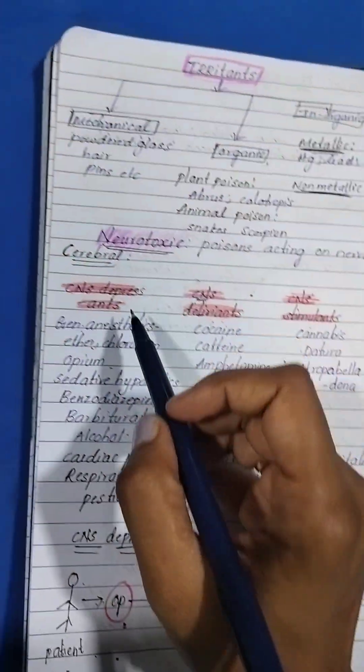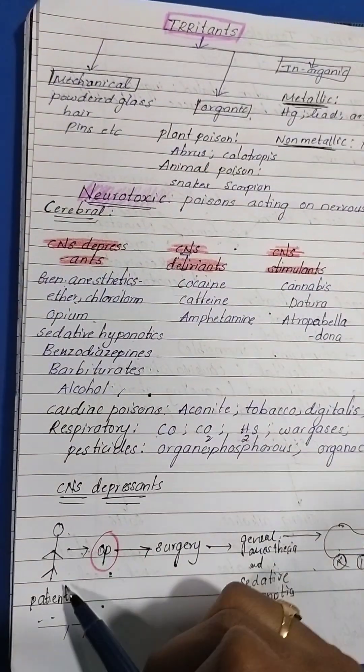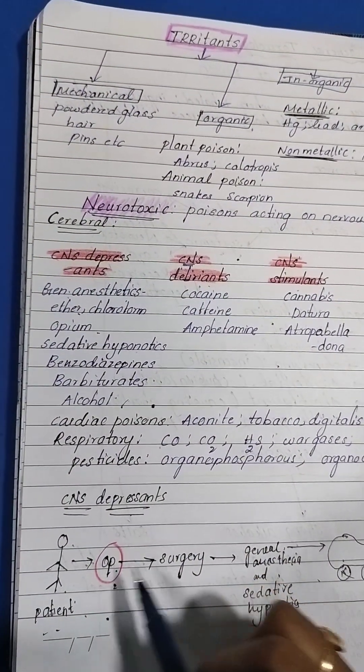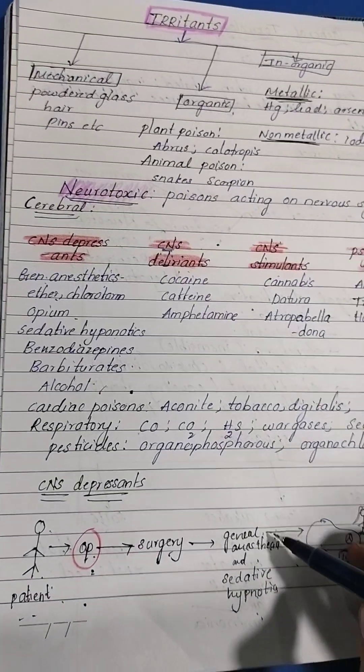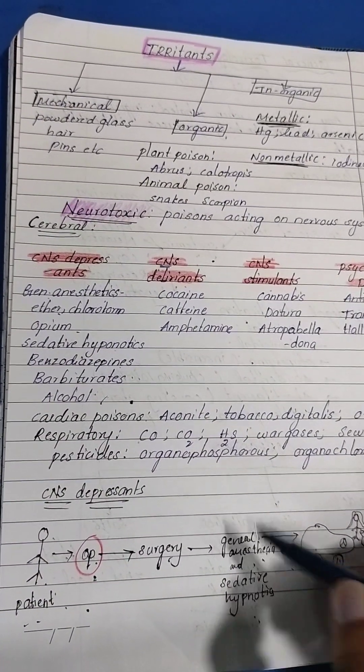Now you'll remember this: patient came to the operation, they planned for surgery and gave general anesthetic, the ether and chloroform, and sedative hypnotics.